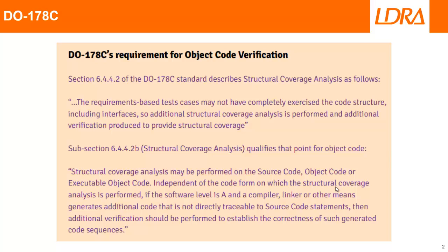If you look at the DO-178C standard, it says that not only do you need to ensure you have 100% structural coverage of the source code, but at the end of the day, that source code then gets converted by the compiler and linker into object code or executable object code. And for the DAL level A, we need to ensure that the compiler and linker has not generated any additional code that can't be traced back to source code statements.